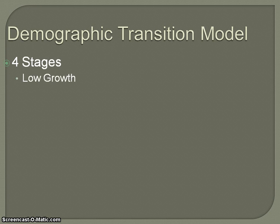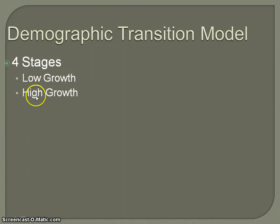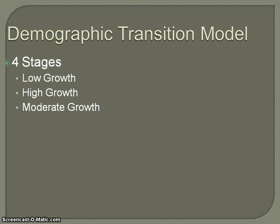In the first stage, we characterize it as a stage of low growth. The second stage is characterized as a stage of high growth — some argue this is the most crucial stage, because if countries cannot move through that period of high growth in relatively short order, then you have the problem of overpopulation. The third stage is characterized by moderate growth, and the fourth stage, once again, by low growth.